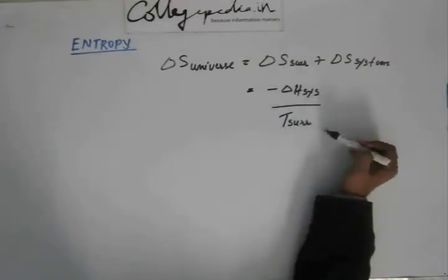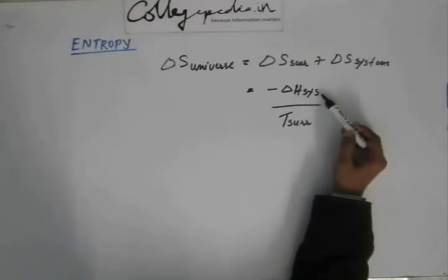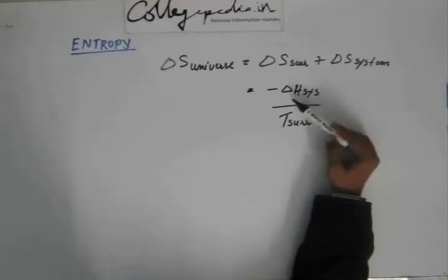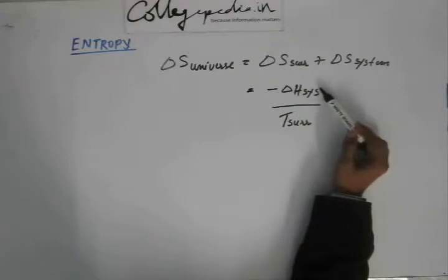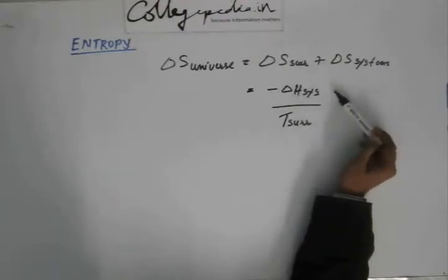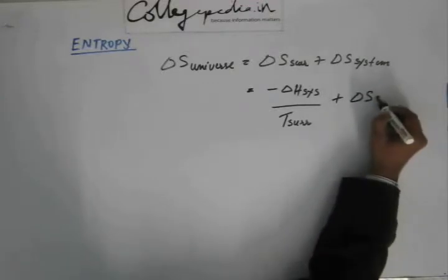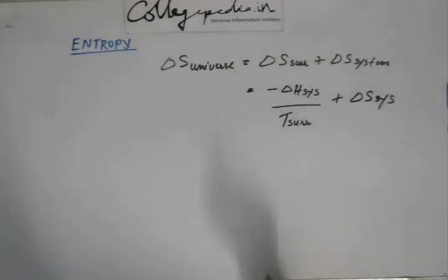This came from the basic definition dS = dQ/T, and dQ at constant pressure and constant volume equals dH of the surrounding. So dS_surrounding equals dH_surrounding / T, and dH_surrounding equals minus dH_system. Therefore ΔS_surrounding becomes minus ΔH_system divided by T_surrounding. We have discussed this before and we reach this expression.